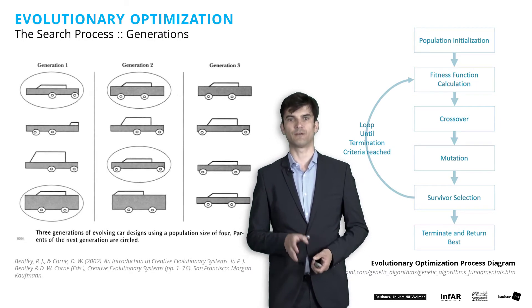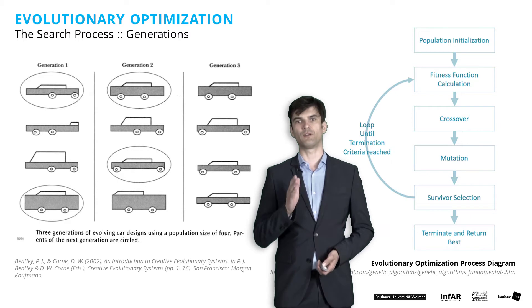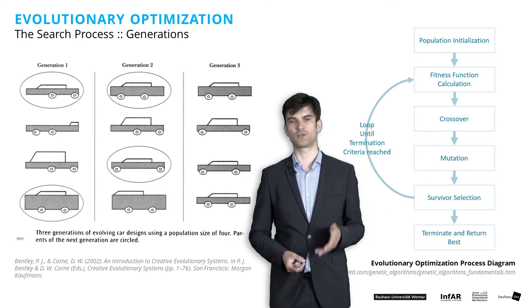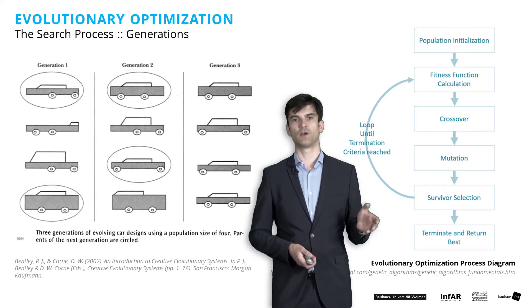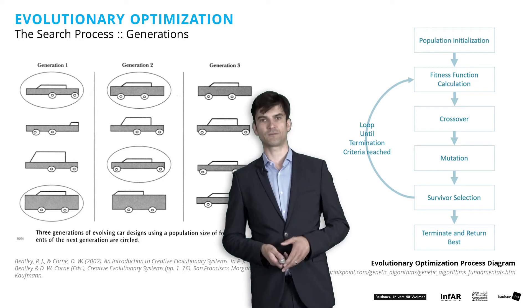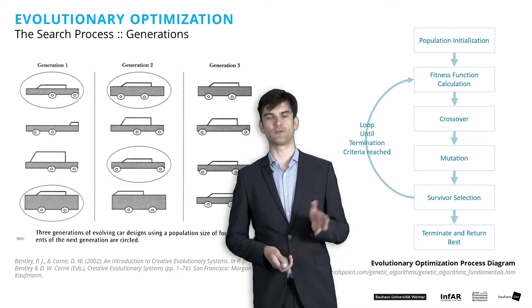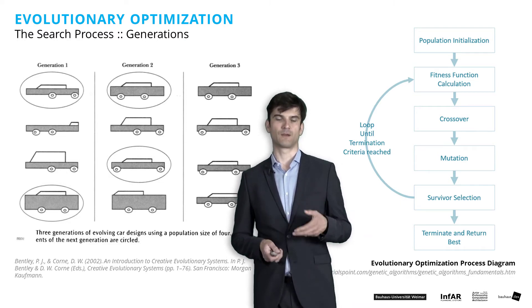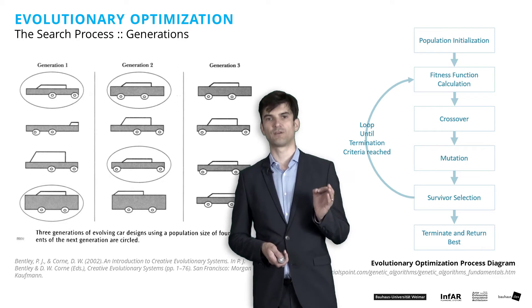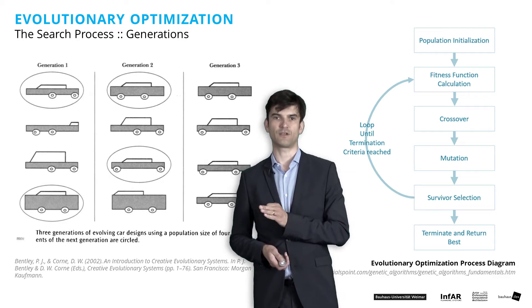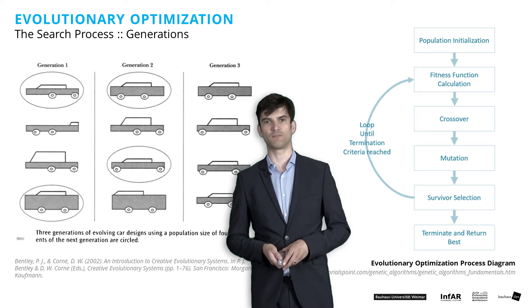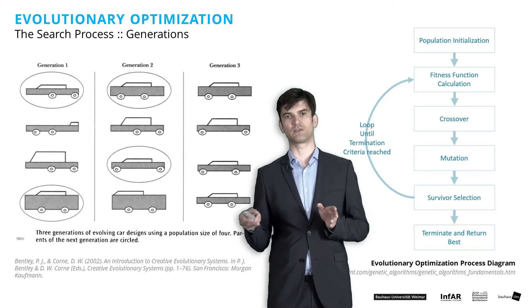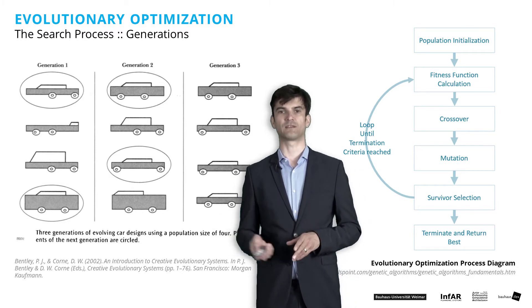Here you can see the example of the cars again. We see three generations, each with four individuals — so the population size is four individuals per generation. You can see how the individuals change, how the phenotype changes from generation to generation based on the selections made before. The selection in the first generation has consequences for the results in the second generation.